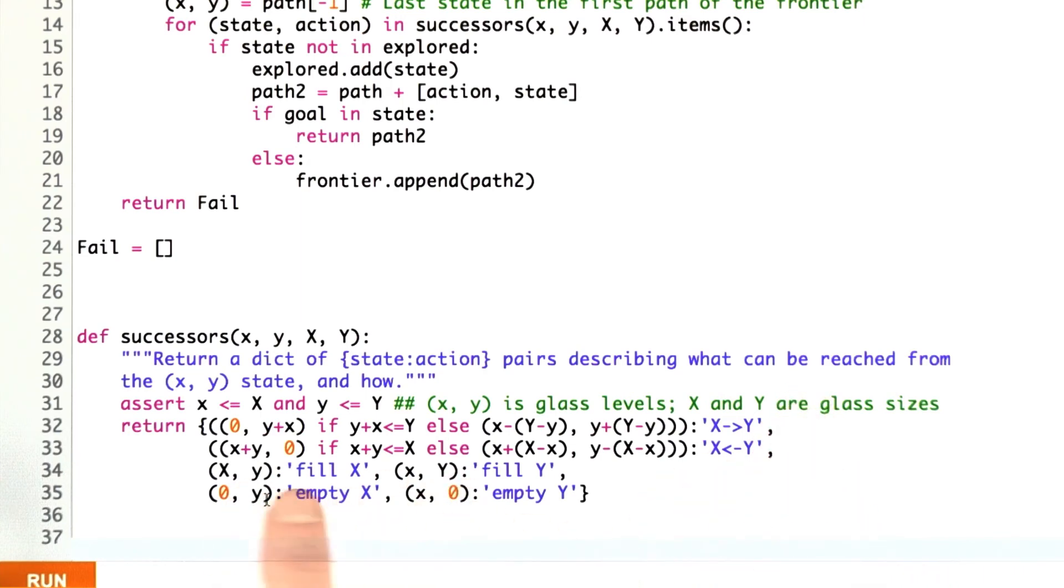The pouring is complicated. Let's do the filling first. The filling says you can fill x up to its capacity, capital X. You can fill y up to its capacity, capital Y. You can empty x, that will become 0. You can empty y, it will become 0.